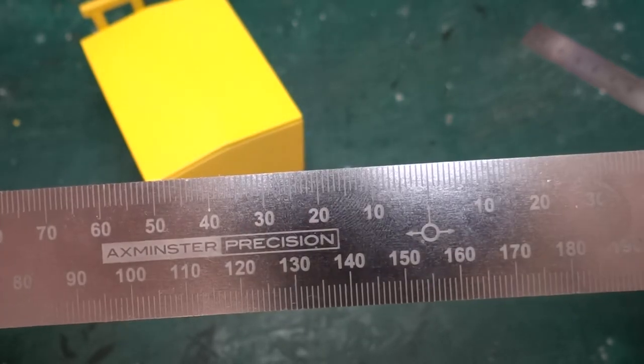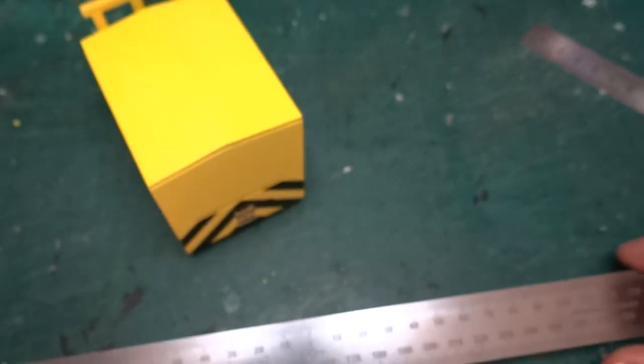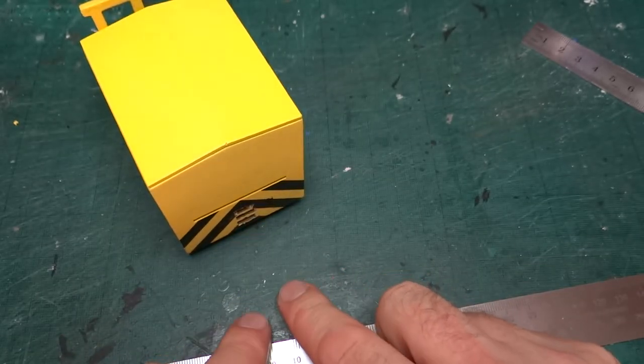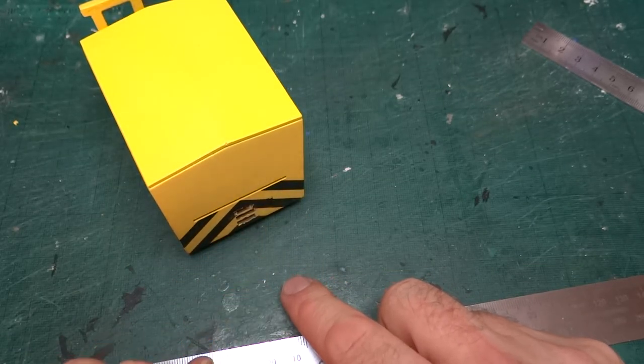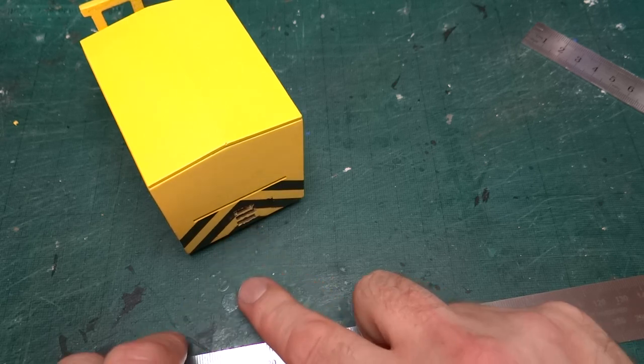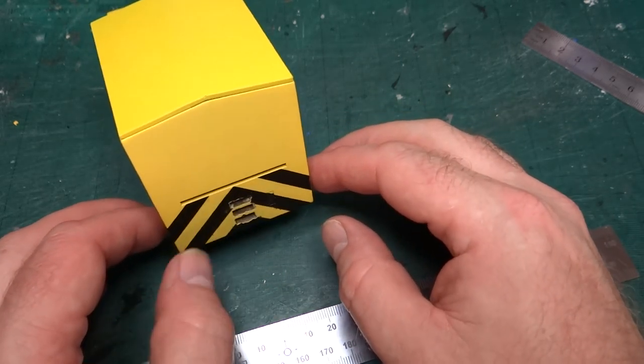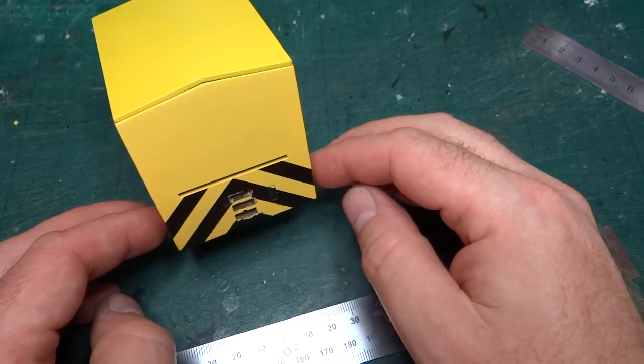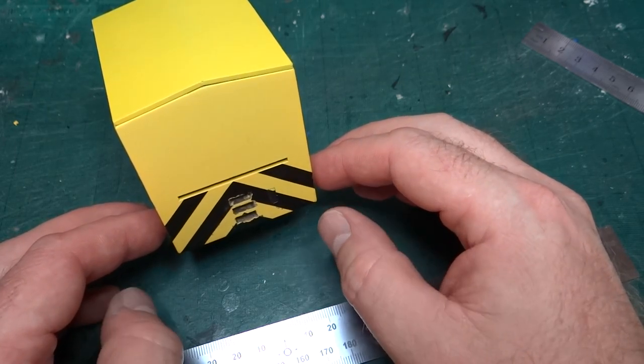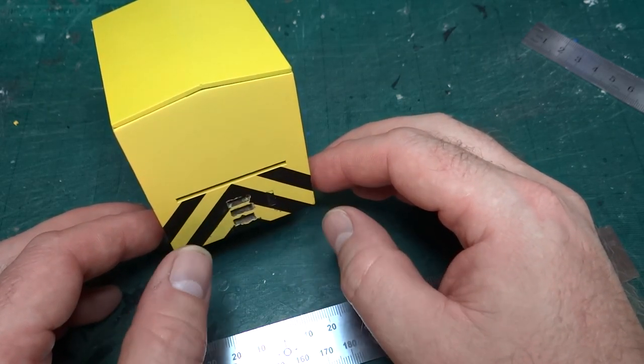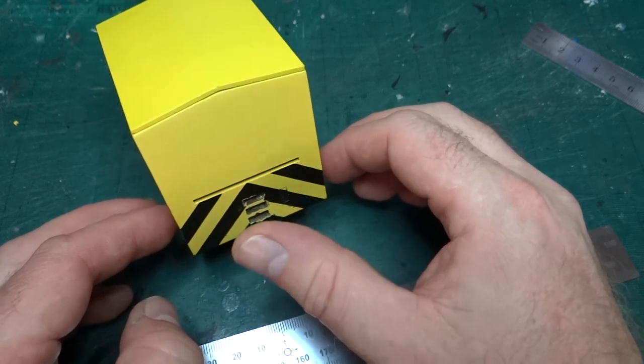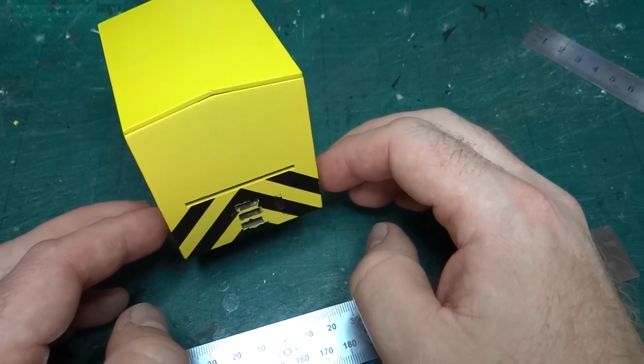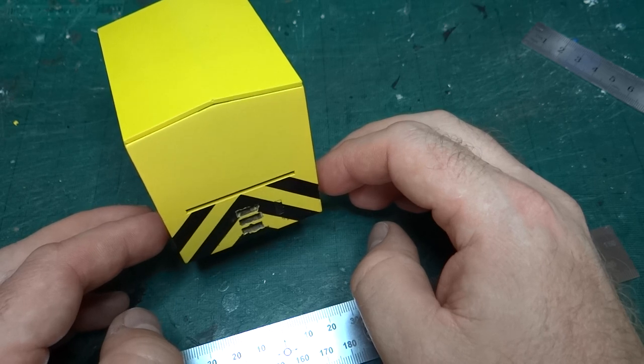So there we go. That's kind of two things in one, the ruler, and how I did the masking for the wasp stripes. As I say, I was just very lucky on this model that the thickness of the tape I used and the dimensions of this buffer beam mean that I got a 45 degree, I got a 90 degree angle when I put the two pieces of tape on. That made life so much easier.